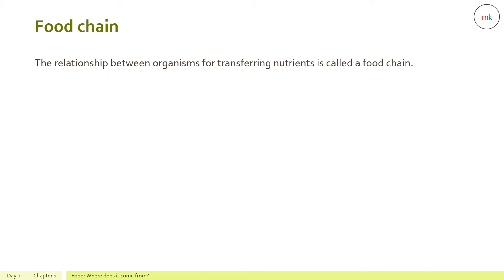The relationship between organisms for transferring nutrients is called a food chain. It consists of a series of animals through which energy or nutrients pass. In a habitat, all food chains start with plants, making all animals depend directly or indirectly on plants for food. Plants use the energy in sunlight to make their food and are called producers.